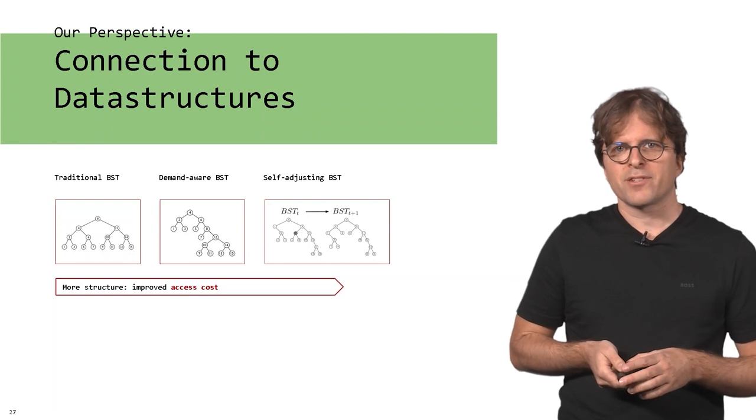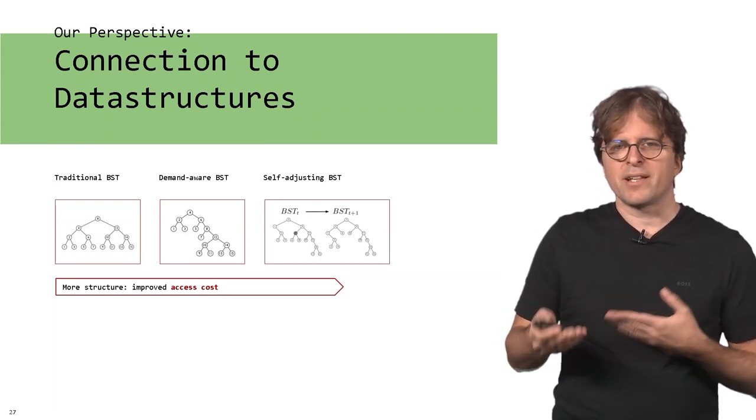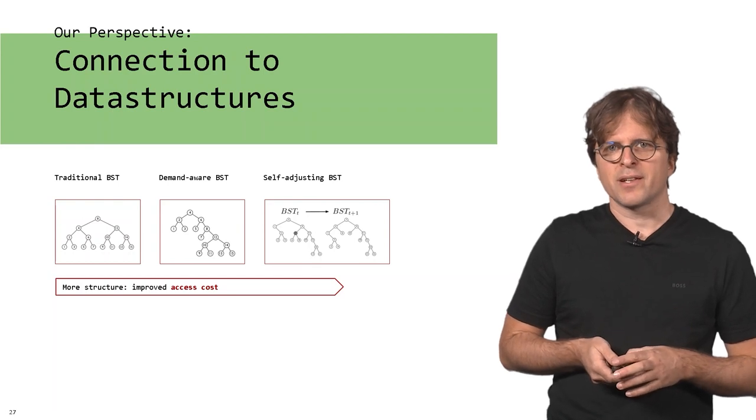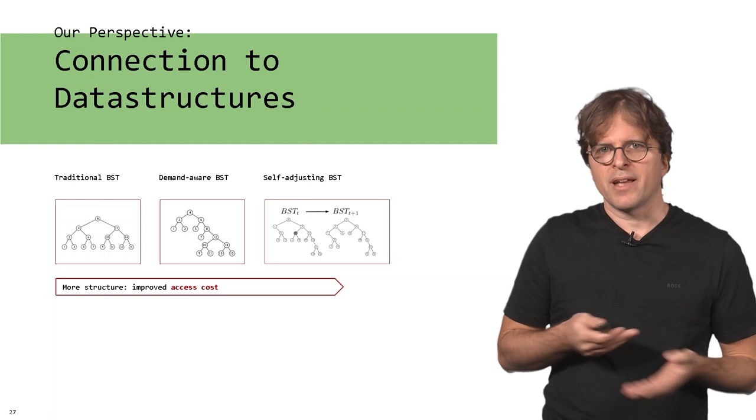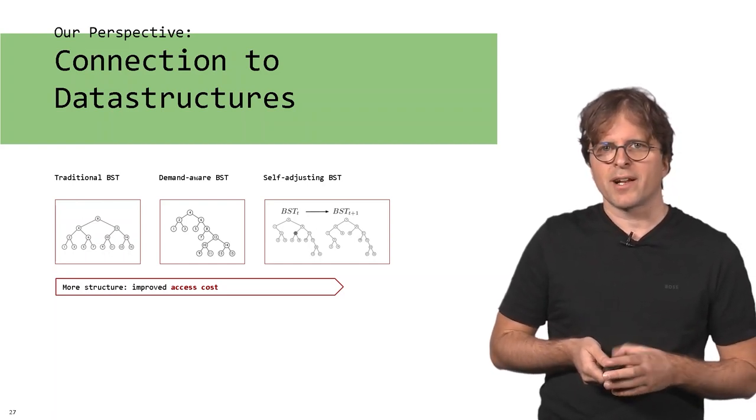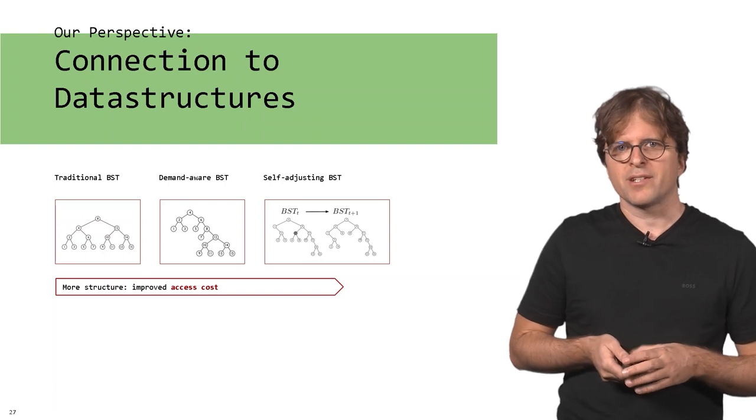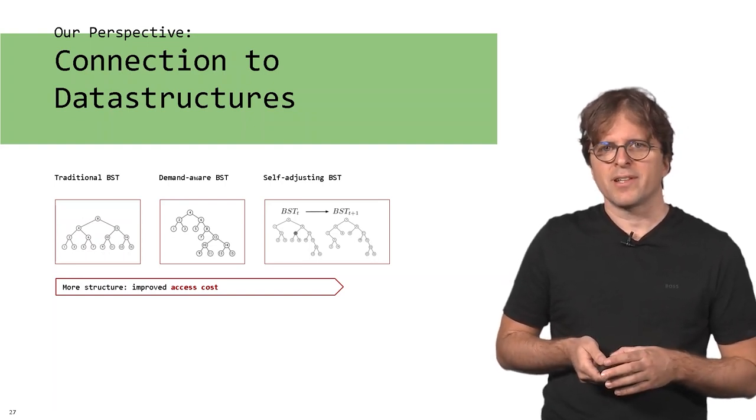Then there's something called self-adjusting binary search trees, for example splay trees. These are trees that even adapt their structure to the demand. If you have a certain access pattern, maybe over time this can change. Accordingly, the binary search tree can change and reduce the access cost further that you have.